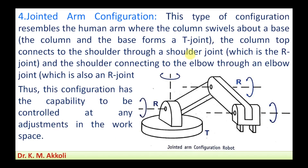The jointed arm configuration is similar to the human arm attached to the human body. The column and the base form a T-joint, allowing the column to rotate about its base. The column top connects to the shoulder by an R joint, and the shoulder connects to the elbow, again using an R joint.